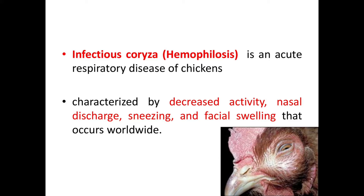Infectious Coryza or Haemophilosis is an acute respiratory disease of chickens. The disease is characterized by decreased activity, nasal discharge, sneezing, and facial swelling that occurs worldwide. The disease apparently affects only chickens. Reports in quail and pheasants likely describe a similar disease but caused by a different bacterium.